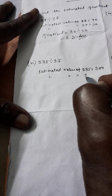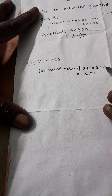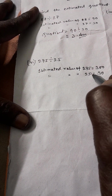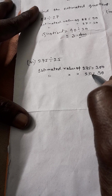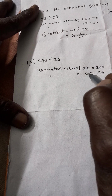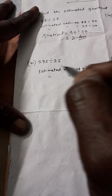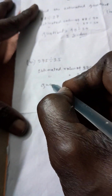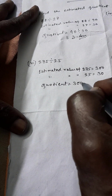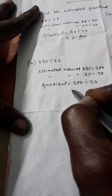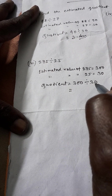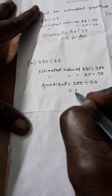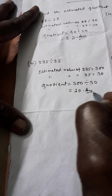The estimated value of 25 will be 30. As I told you, if the value is 5 or equal to 5 or more than 5, we increase the previous value. So 25 becomes 30. Therefore, the quotient will be 300 divided by 30. If you divide 300 by 30, it goes 10 times, because 30 tens are 300. So the answer is 10.